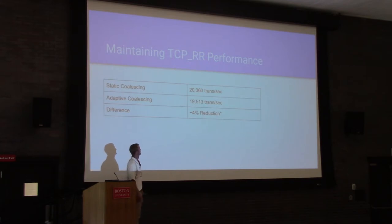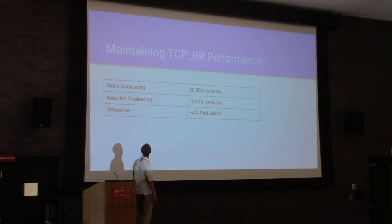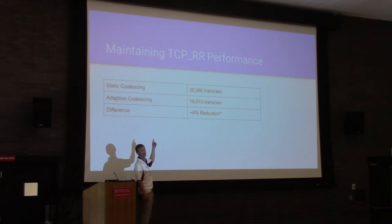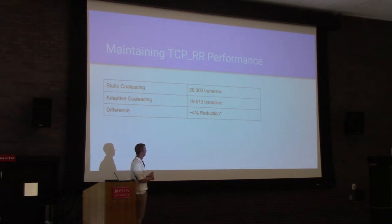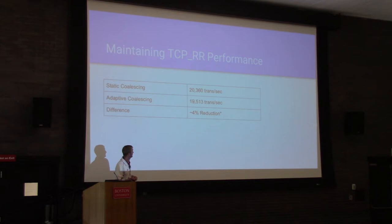We also did TCP RR performance testing. With our original static coalescing at the best rate we could do, we achieved about 20,000 transactions per second. With adaptive, we're about 4% less. The fact that attending to every interrupt and every packet arrival — doing computation statistically within a certain number of packets — caused only a 4% hit in this single-stream test was a real positive for the customers we were targeting, and they were quite pleased.